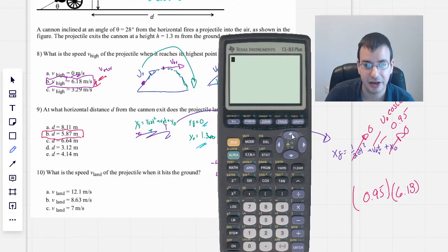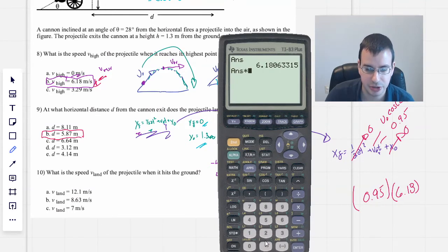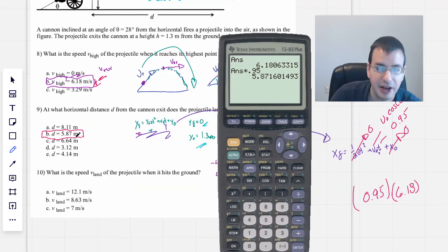So x final will be 0.95 times 6.18. Can I get it back? Yes. Times 0.95. 5.87. Check. So that's the answer we wanted. Excellent.